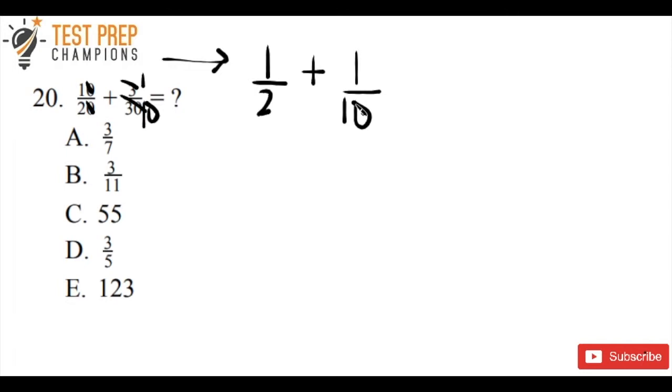So now what we want to do is we want to get a common denominator, and whenever you're adding fractions you always need to get what's called a common denominator. The top number of a fraction is called your numerator, and the bottom number is called the denominator.